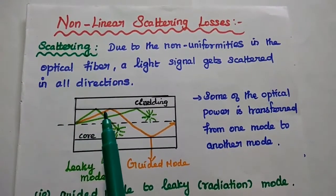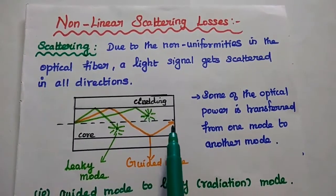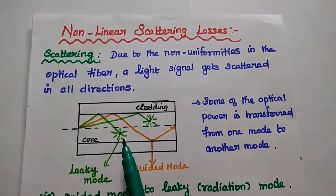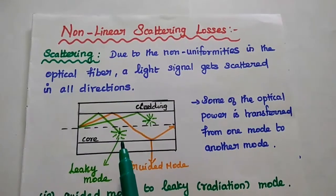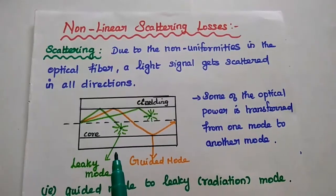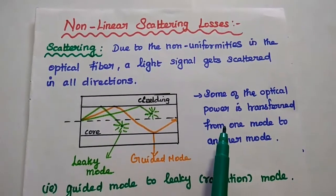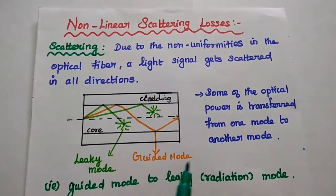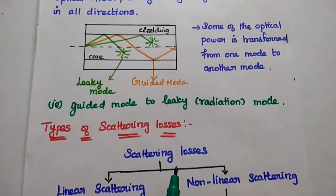it is guided along the core axis using the total internal reflection mechanism. But due to some non-uniformities in the fiber cable, the light signal gets scattered in all directions. This scattered signal is known as a leaky mode, while the properly confined signal is known as the guided mode. Some optical power is transferred from the guided mode to the leaky mode in these scattering losses.